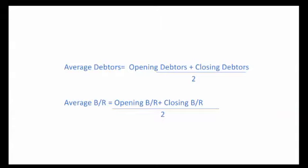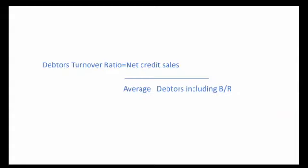The proportion of the debtors already collected — that is how the ratio is understood. To know the ratio, calculate the equation: net credit sales divided by average debtors plus average bills receivable. Average debtors including bills receivable means average debtors plus average bills receivable. This formula gives the average number of times debtors are collected during a period.